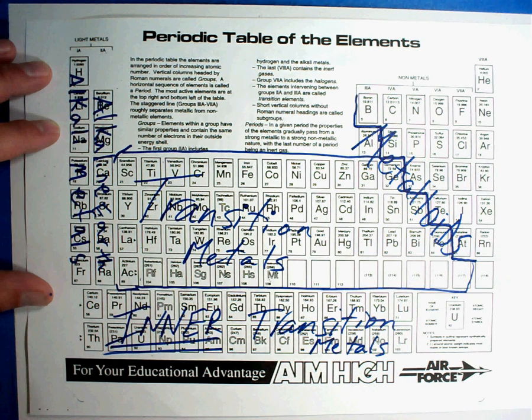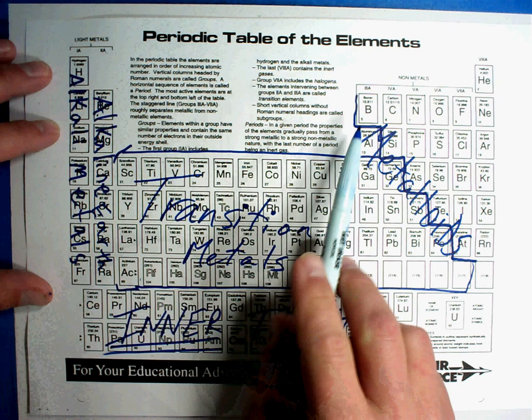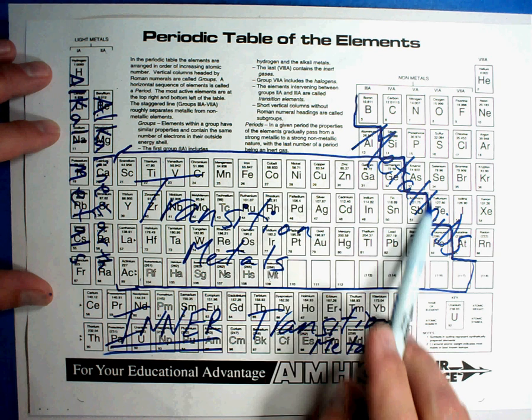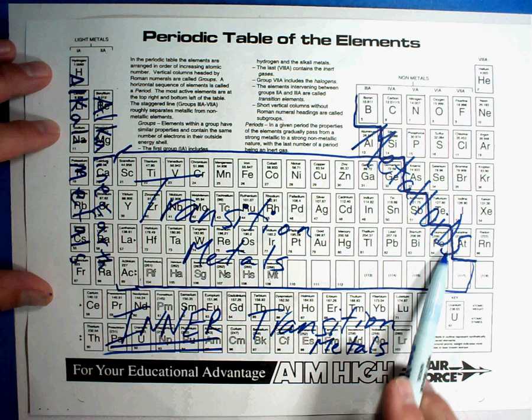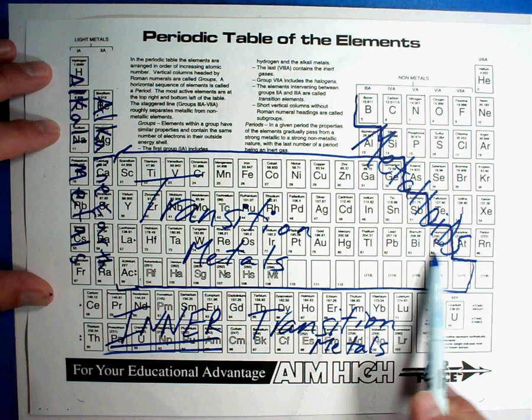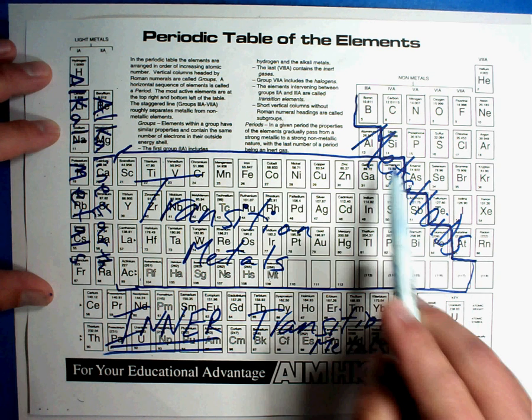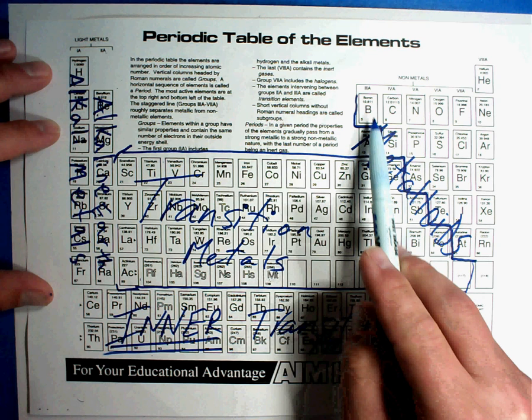It acts like both. So anything that touches this staircase all the way down, touches it with a side. So Po and At and Sb and Te and Ge and As and Al and Si and B, they're all metalloids. They act like metals and they also act a little bit like non-metals.